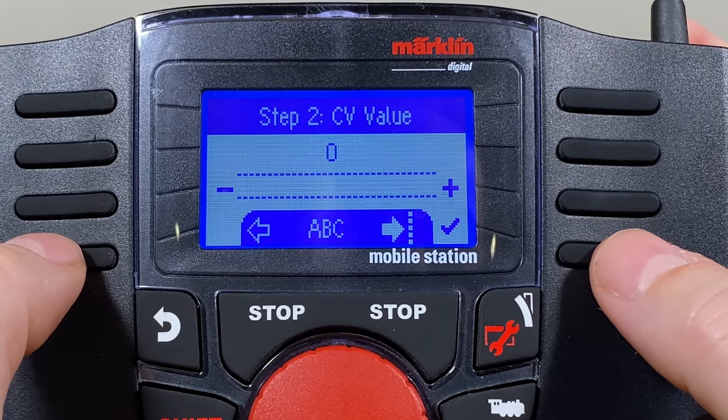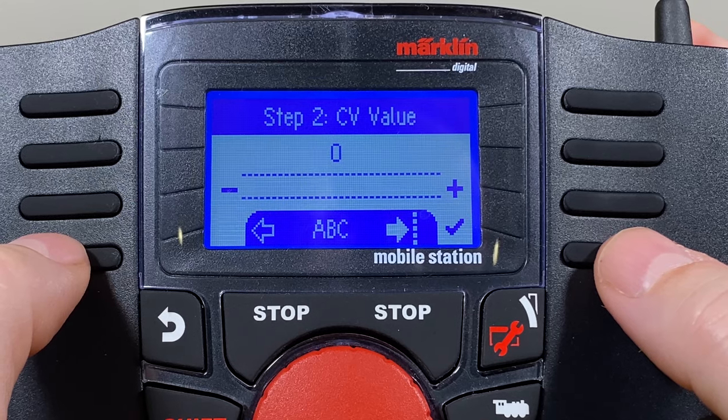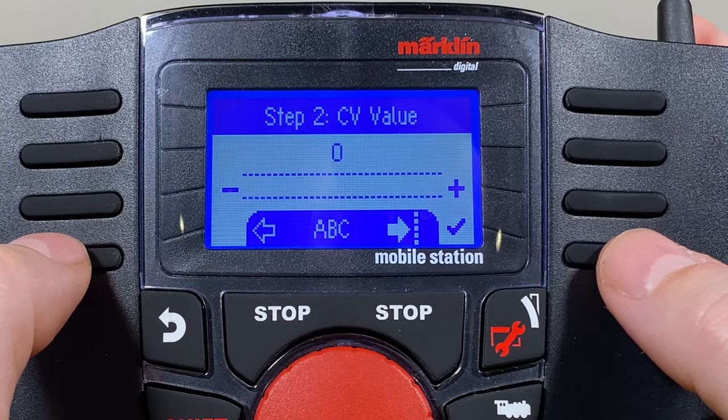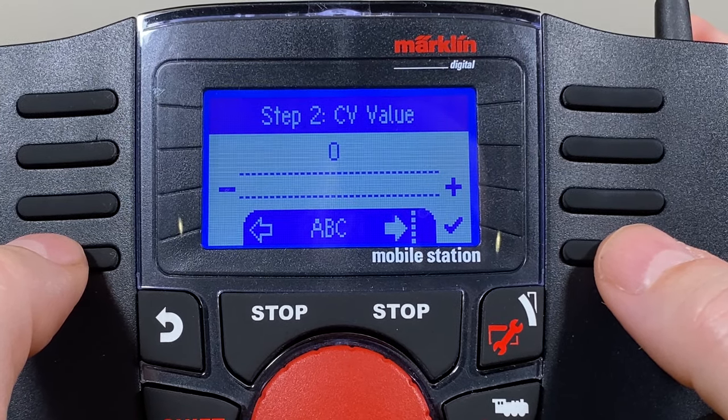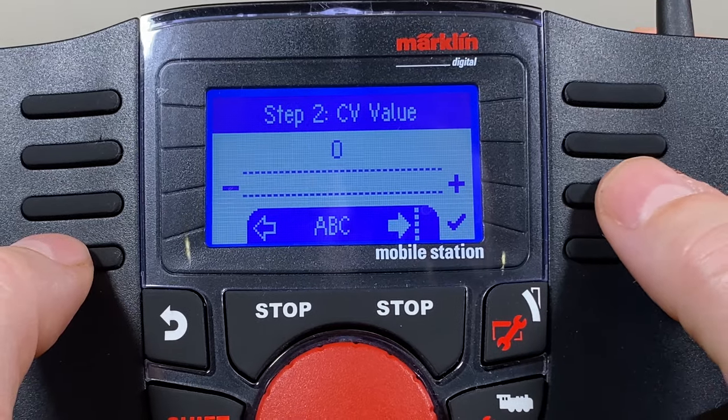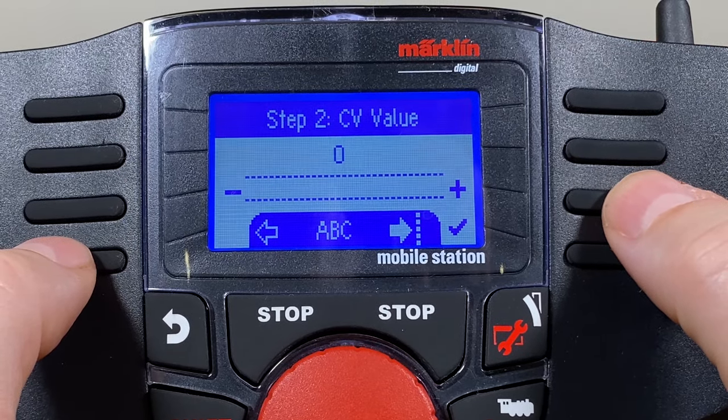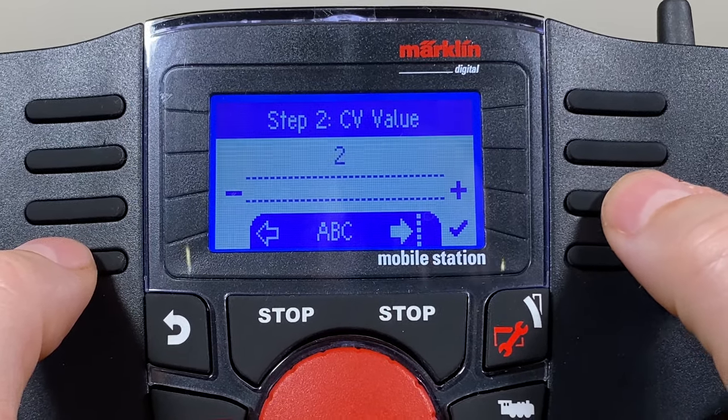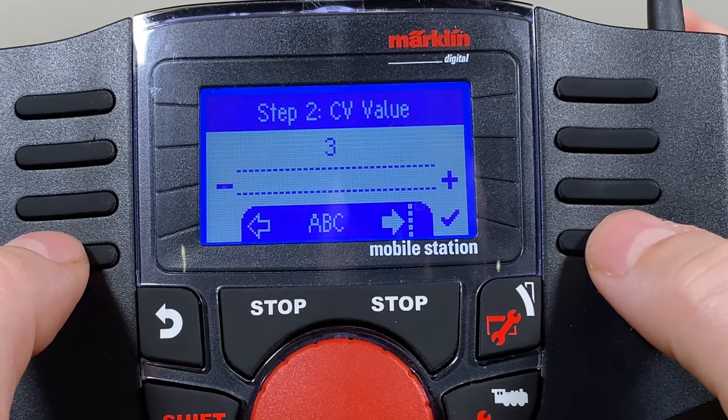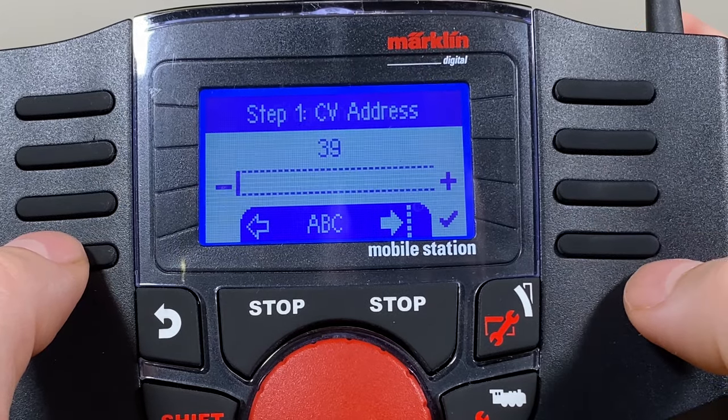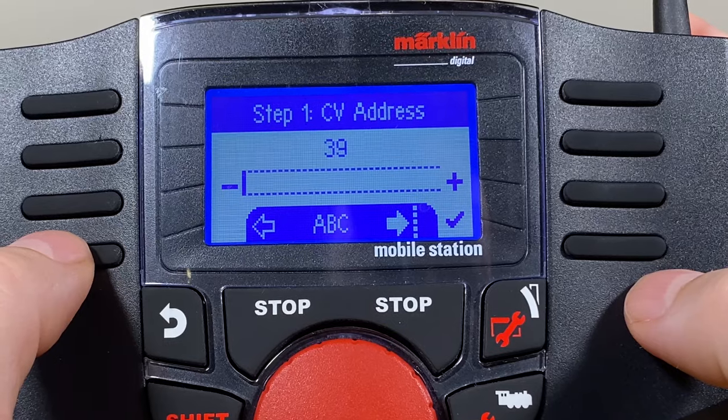The good thing is as you saw it said the value is being read. The good thing about being in DCC mode is I can actually see also what the value is. Now I can go and change it to value 3 as I want it. I can hit check mark and now it's programmed.